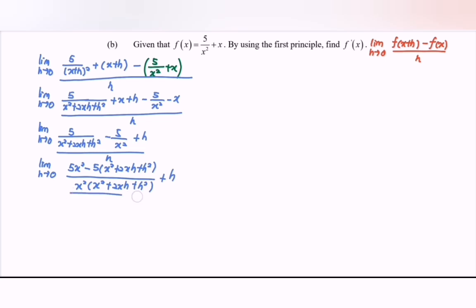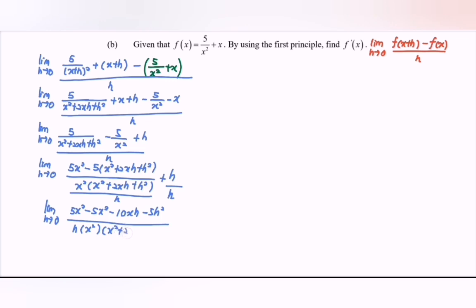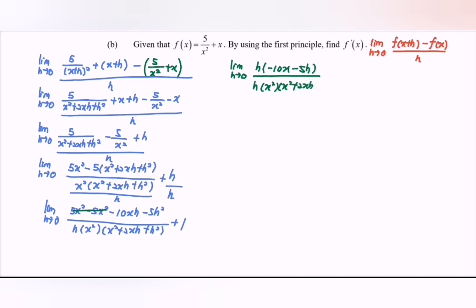Simplifying further: limit as h approaches 0. We have 5x squared minus 5x squared, then negative 10xh and negative 5h squared, over h multiplied with x squared, multiplied with x squared plus 2xh plus h squared, plus 1. The 5x squared terms cancel to 0. Factor out h from the numerator: h times (negative 10x minus 5h) divided by h times the denominator expression.